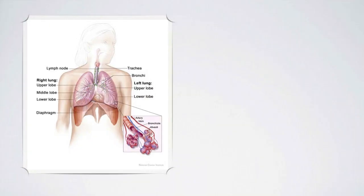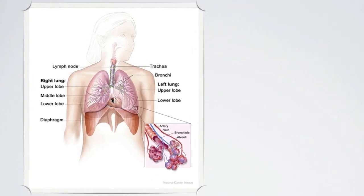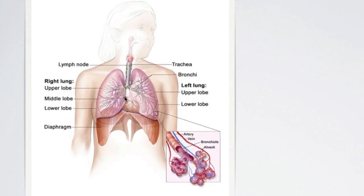We've already done an introduction to the respiratory system and we've shown how the heart beats and sends the blood. When the right ventricle sends the blood, it sends it to the lungs. That comes back to the left atria and then the left ventricle pumps and sends the blood through the rest of the body.